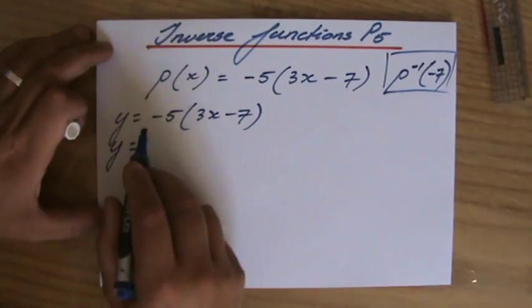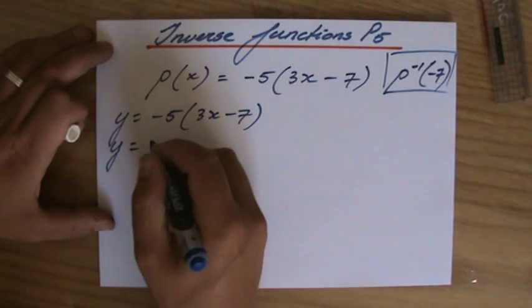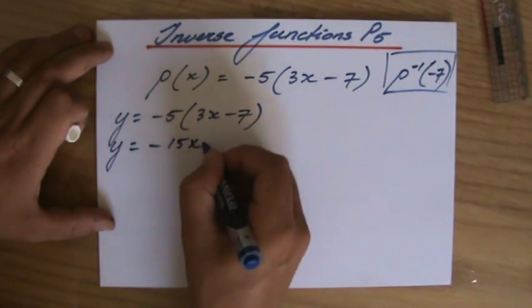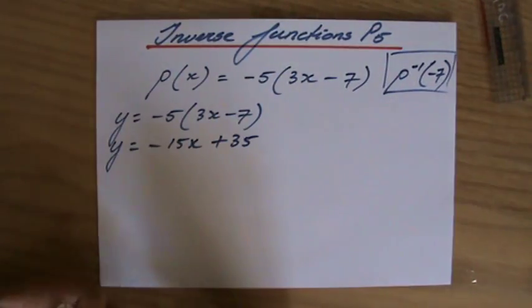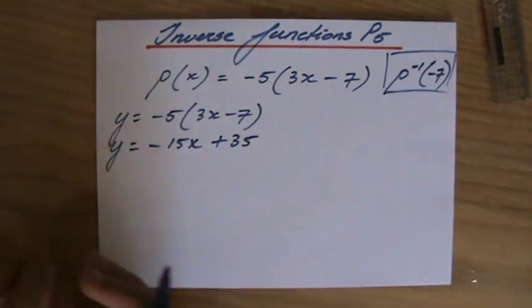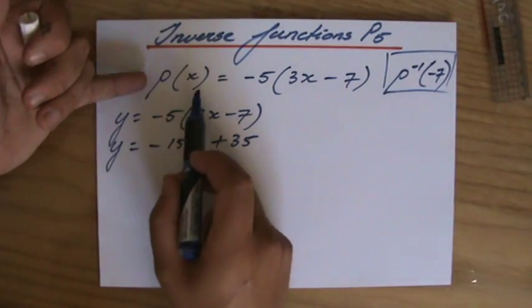Let me expand this. -5 times 3x is -15x, and -5 times -7 is positive 35. I do not have to expand this, but I rather do. So to find the inverse, rather than P(x), I write y.